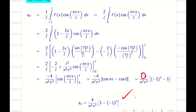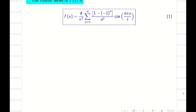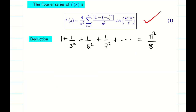B n is 0, A naught is 0. Substituting A n into the original function f of x we obtain the Fourier series. We have found the Fourier series f of x and substituted A n. Now the final step is step 6: finding the deduction. The deduction required is 1 plus 1 over 3 squared plus 1 over 5 squared, and so on, equals pi squared over 8.